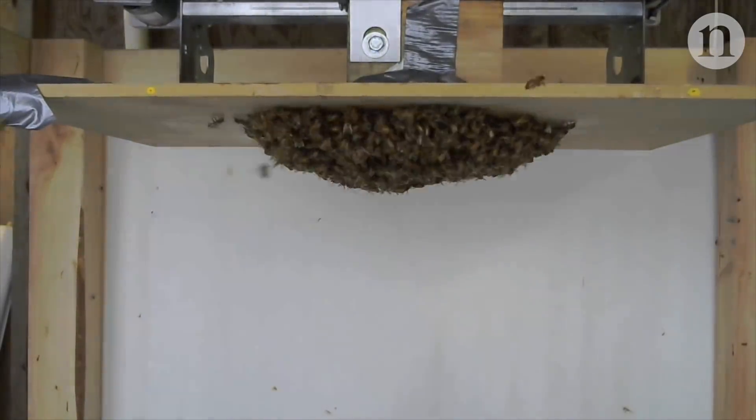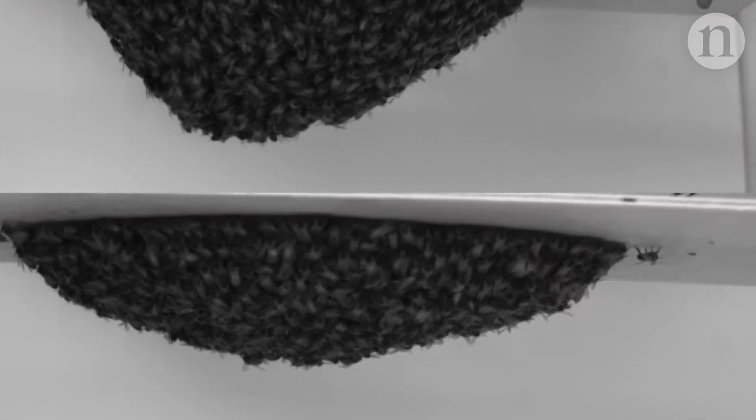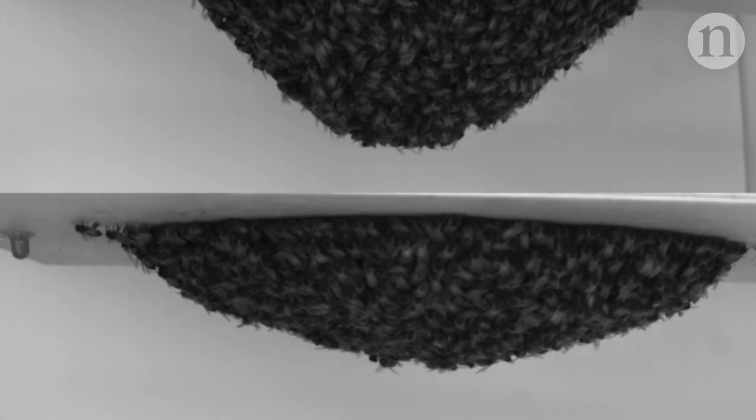The flatter shape changes the colony's centre of mass, and so it wobbles less, reducing the pressure on the bees. It makes sense.